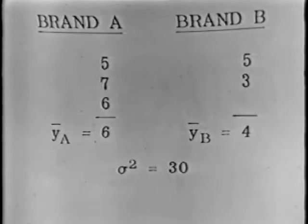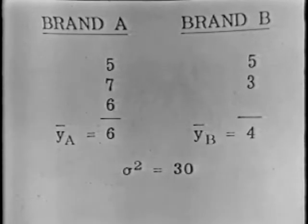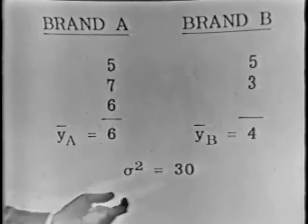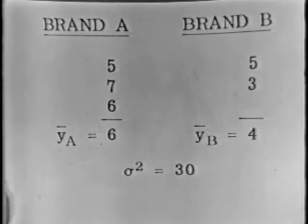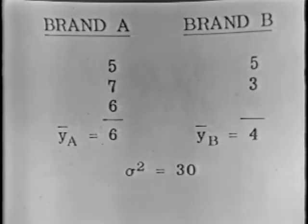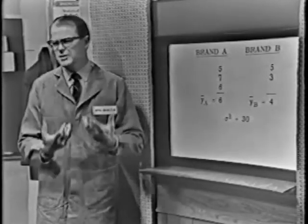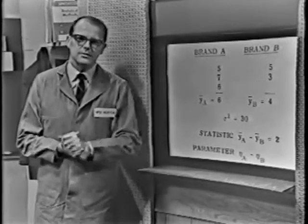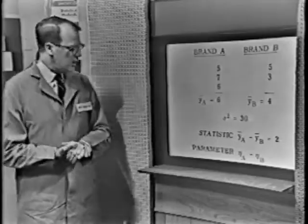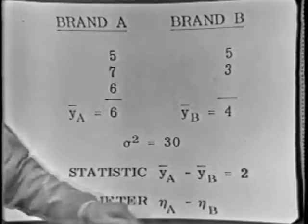The average for brand A turned out to be six. For brand B, we only had two cakes, and the average of those two observations is four. The variance of this data-taking procedure — measuring moisture on cakes — happens to equal 30 units squared. The essential statistic we're interested in is the difference you're trying to compare between the two brands: η_A minus η_B. The statistic that estimates that parameter is y-bar_A minus y-bar_B, which in this instance comes out equal to two.